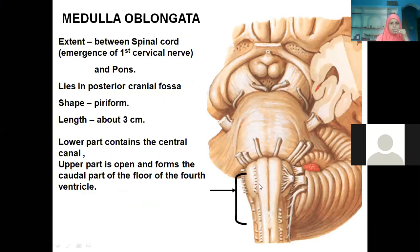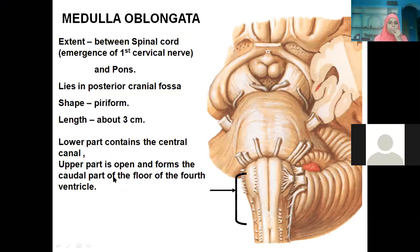It lies in the posterior cranial fossa. The shape of the medulla oblongata is pyriform, and its length is around three centimeters. When you take a section in the center, you will see a central canal in continuation with the central canal of the spinal cord. The upper part will be open, forming the caudal part of the floor of the fourth ventricle.